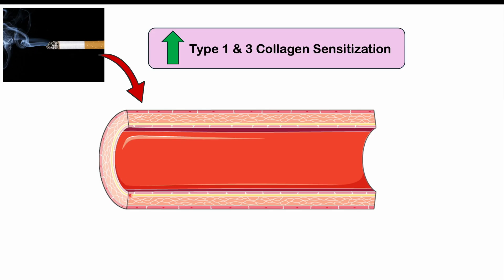Not everyone who smokes or chews tobacco is going to get Buerger's disease, so there's something else going on. That something else is likely increased type 1 and type 3 collagen sensitization. The arteries themselves are composed of type 3 collagen, other parts of the arteries are composed of type 1, and basement membranes of cells are composed of type 4. So when an individual smokes or chews tobacco, there's going to be endothelial injury, and certain parts of the artery wall become exposed when they shouldn't.